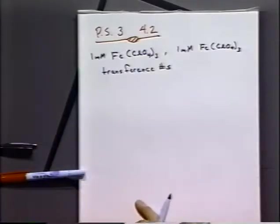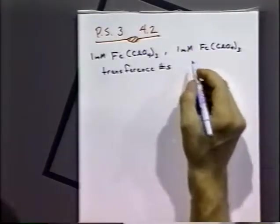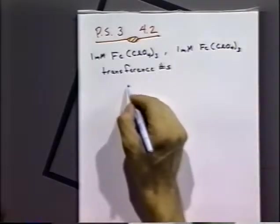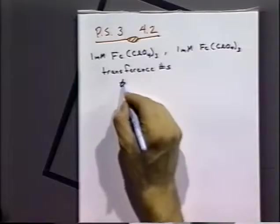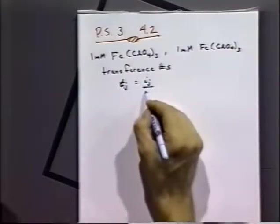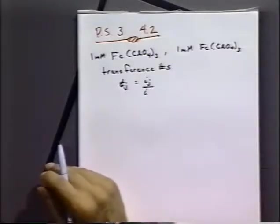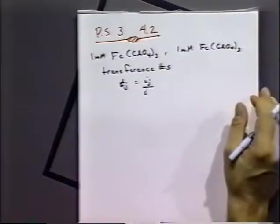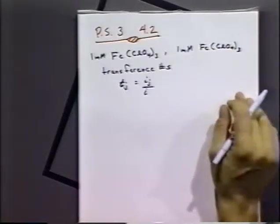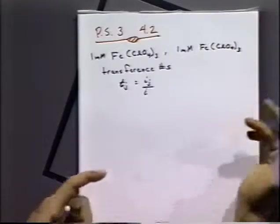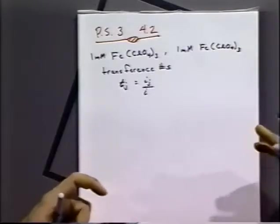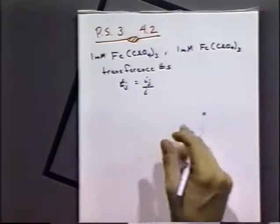Now what are the transference numbers? Let me get back to, if you remember back to I think the second chapter, the transference numbers were defined where the transference numbers were the fraction of the current, the transference number of species J is the fraction of the current carried by species J of the total current. So in other words, for any particular system we can calculate transference numbers for an ion in that system, and that ion transference number will be how much current is being carried by that particular ion.